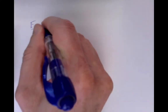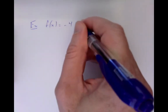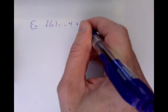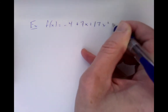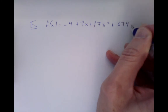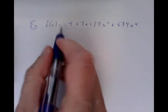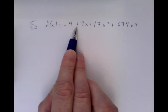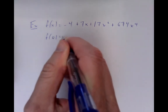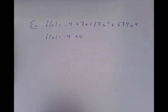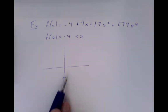Consider the polynomial function of one real variable x, which is minus 4 plus 7x plus 17x squared plus 674x to the fourth. If you plug in x equals 0, all these terms disappear. So f of 0 is just minus 4, which is negative. So in a graph of the function, it starts off negative.